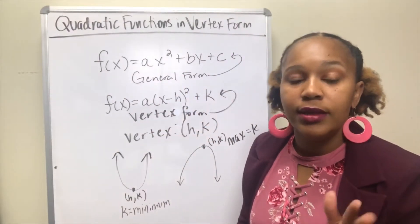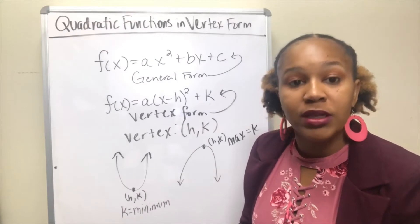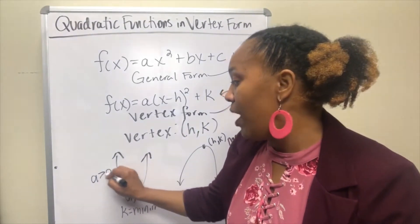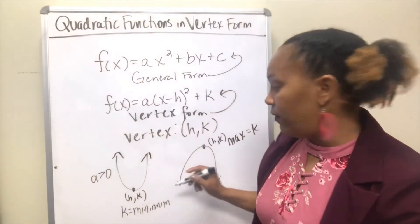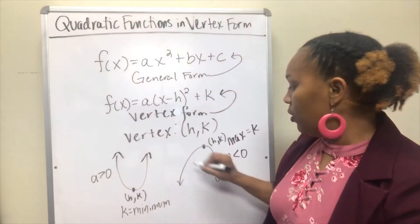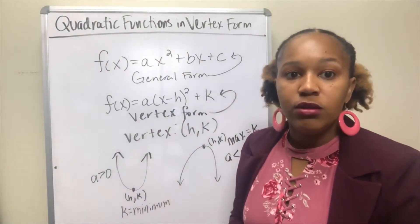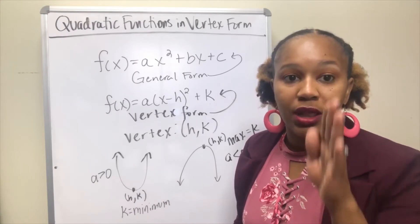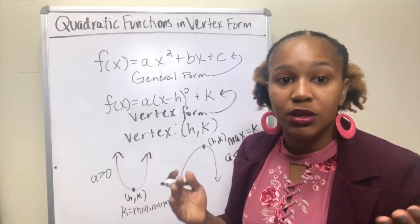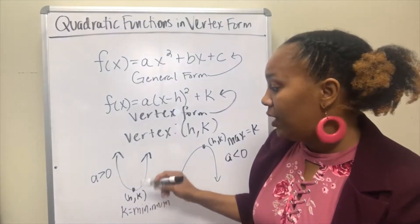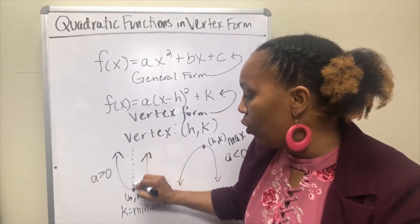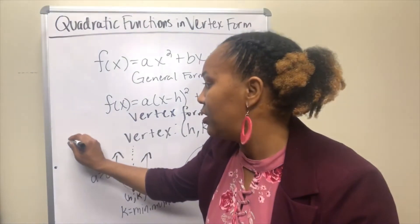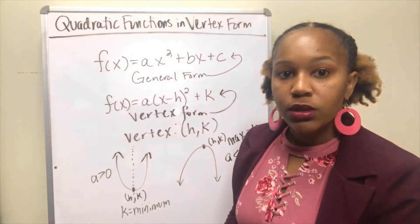So the y-value is either the minimum or the maximum value: minimum if it opens up, maximum if it opens down. Another thing we can tell from the vertex form — and even from the general form — is which way the parabola opens by the value of a. If a is positive, greater than zero, the parabola opens upward. If a is negative, less than zero, the parabola opens downward. Parabolas are also symmetric, meaning you can draw a line down the middle and get the same thing on both sides, so there is a line of symmetry called the axis of symmetry that goes right through the vertex.